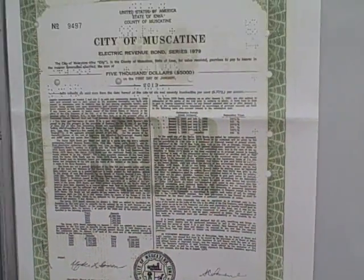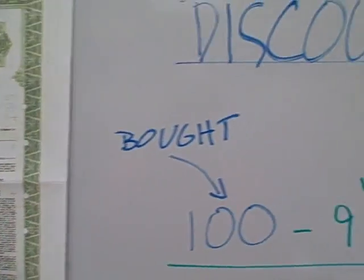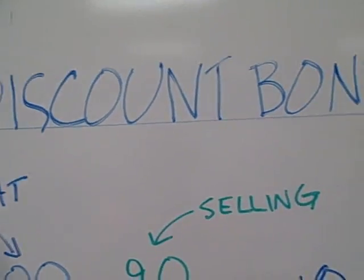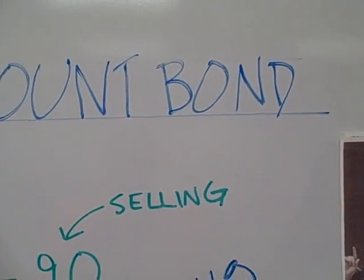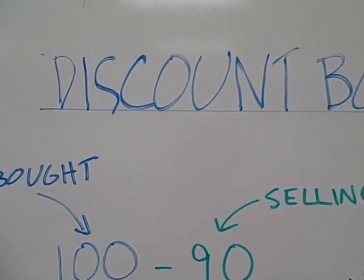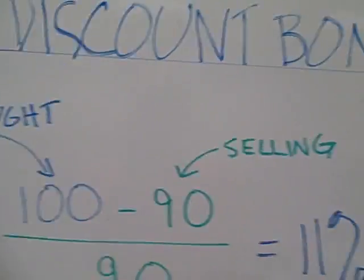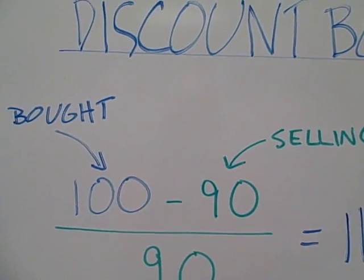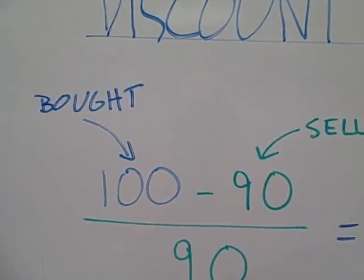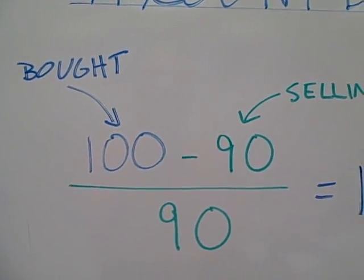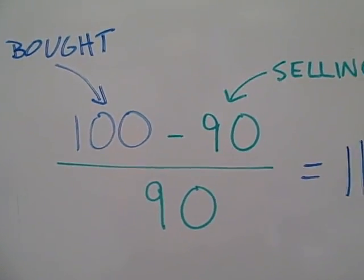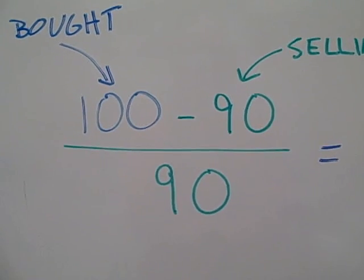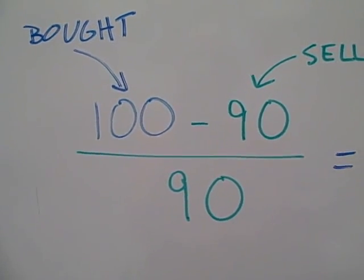But there's another kind of bond called a discount bond. This is a bond where you buy it at a price cheaper than what it is issued at, or the par value, and then you compare your interest rate.